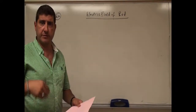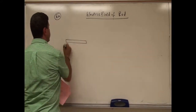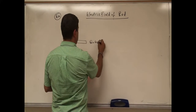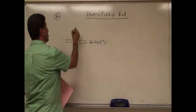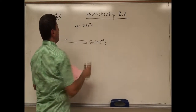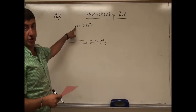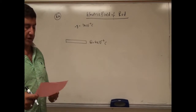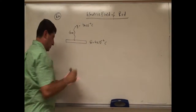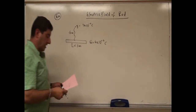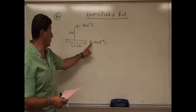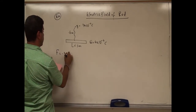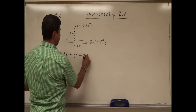Welcome back. Now I'm going to do a follow-up problem to the previous problems. In the previous videos, I solved for what the electric field is at the center of a rod. The charge of the rod is equal to 6 times 10 to the minus 6 coulombs. I put another charge there of 3 times 10 to the minus 6 coulombs, and I found the force of this rod on that charge.